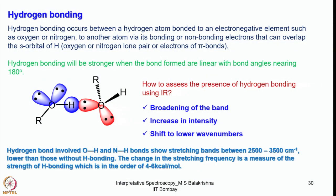Let me continue from where I had stopped. I was discussing about hydrogen bonding. When hydrogen bonding occurs between a hydrogen atom bonded to an electronegative element such as oxygen or nitrogen and another atom where it has bonding or non-bonding electrons — lone pairs of another electronegative atom — interacting with the 1s orbital already shared with the other electronegative atom. For example, if there is an OH bond, the H would interact with lone pair or π electrons.